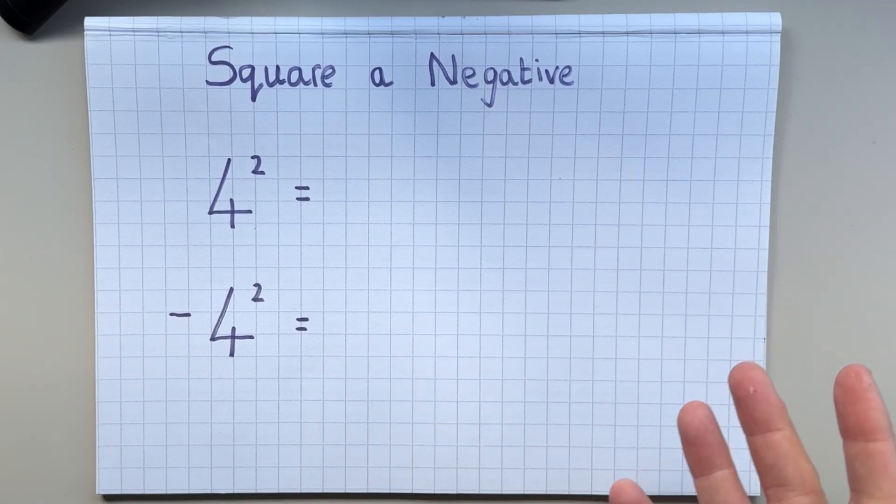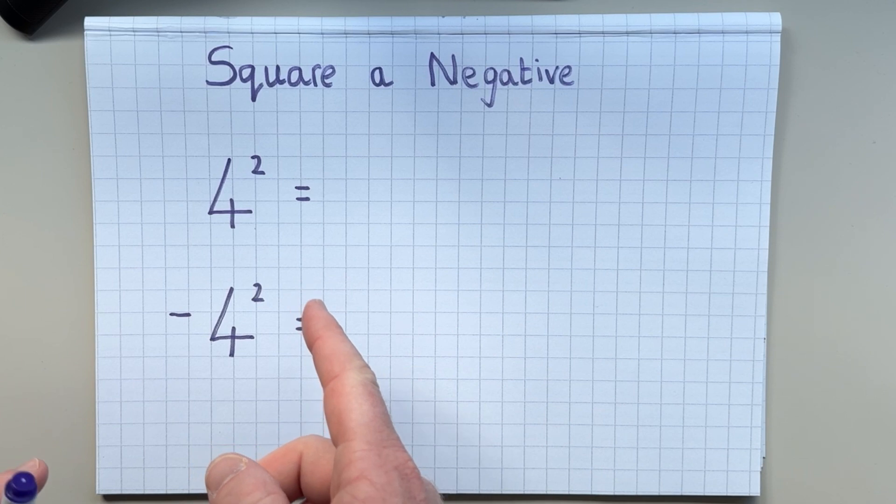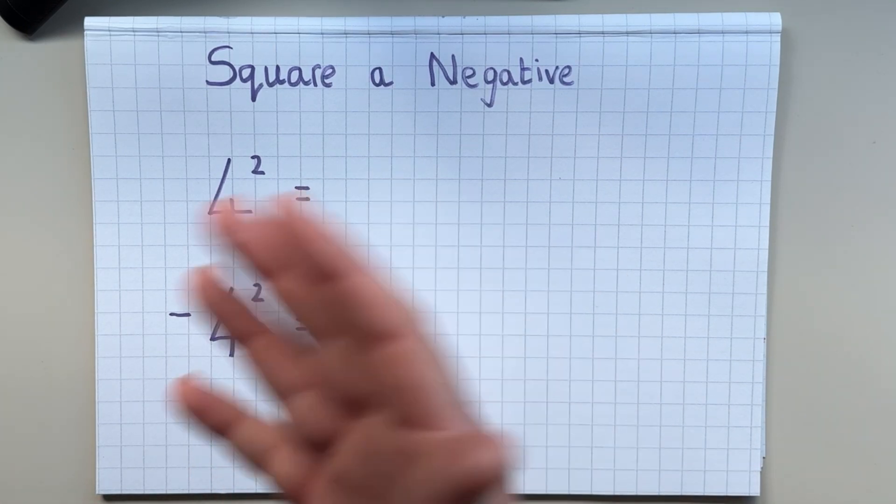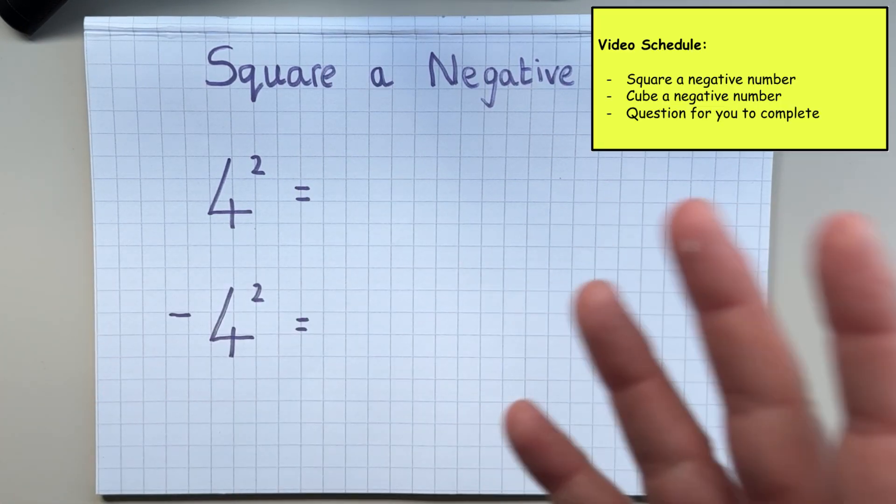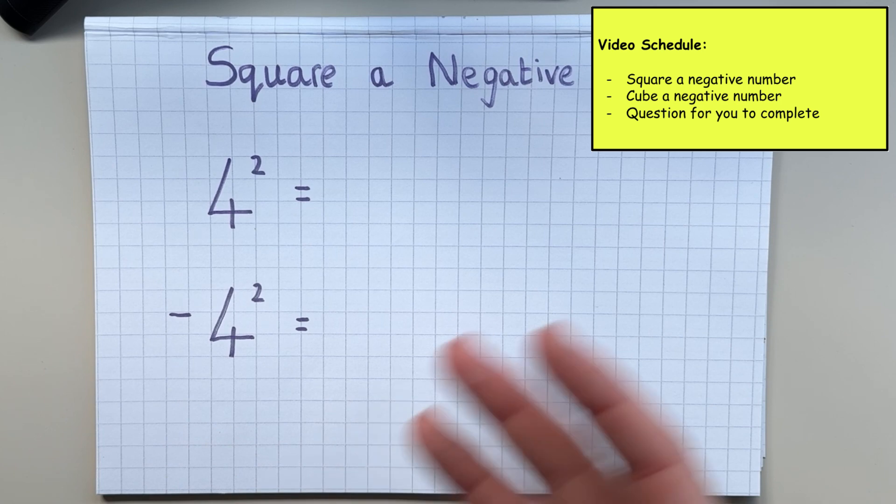So in the first part of this video, we're going to investigate what happens when we square a negative number. And then in the second part of the video, we're going to investigate what happens when you cube a negative number.